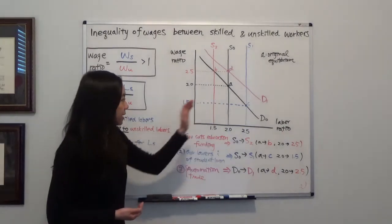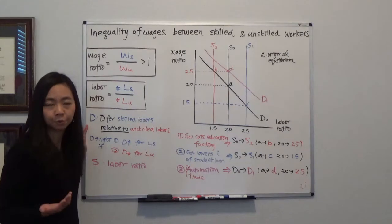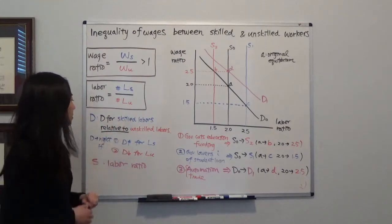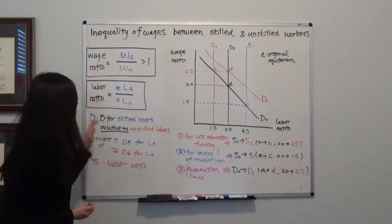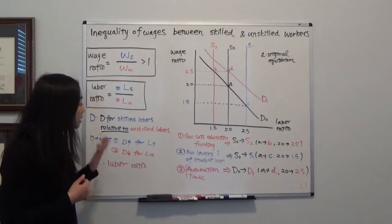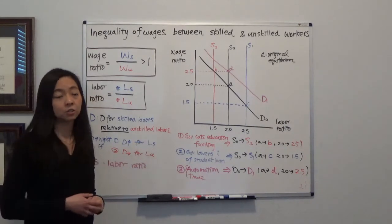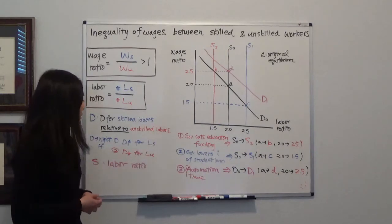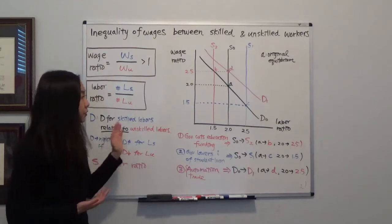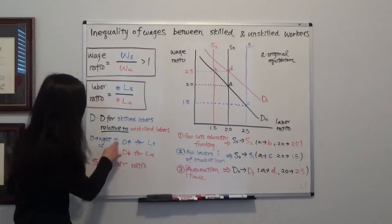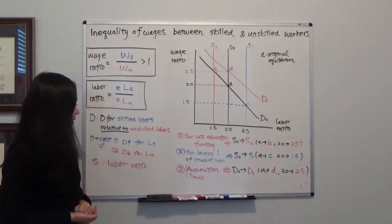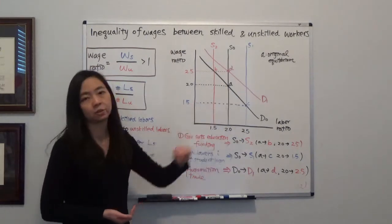Next, let's look at demand — not a typical demand for apples or oranges, but relative demand. This is the demand for skilled laborers relative to the demand for unskilled laborers. The demand curve shifts to the right if: there is an increase in demand for skilled laborers, or a decrease in demand for unskilled laborers, or both happening at the same time.